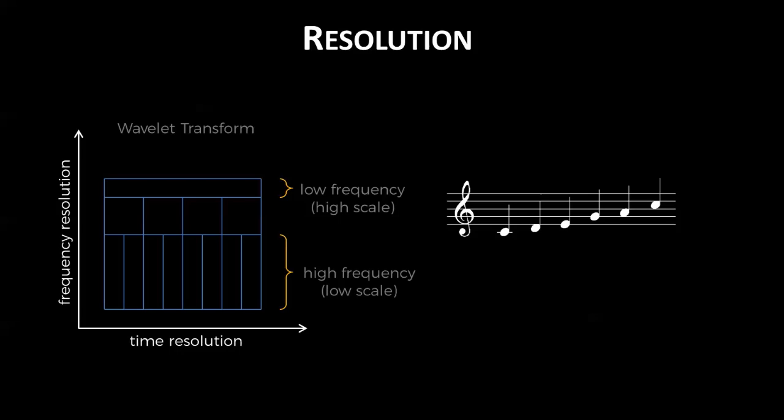Some scientists say that our brains use something like wavelets to interpret music. In music class, you learn that as you ascend in pitch, your frequency doesn't increase linearly. Rather, every time you increase an octave, you're doubling the frequency.